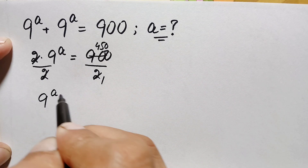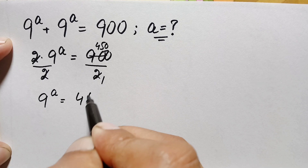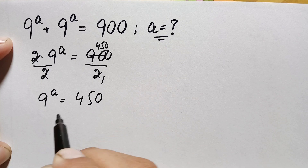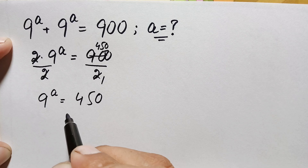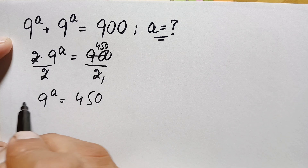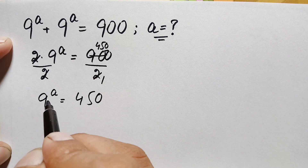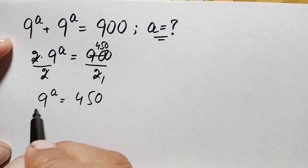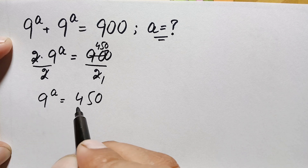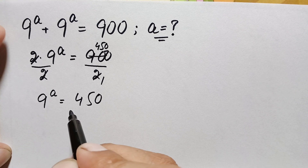We can solve this equation 9^a = 450 using two different methods. The first is to directly take the common log on both sides to find the value of a. The second method uses the fact that both numbers are divisible by 9, so we divide both sides by 9.